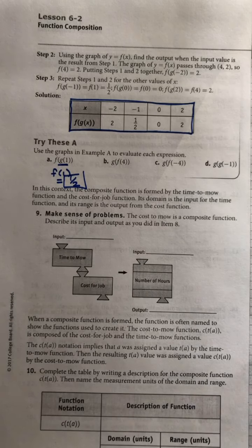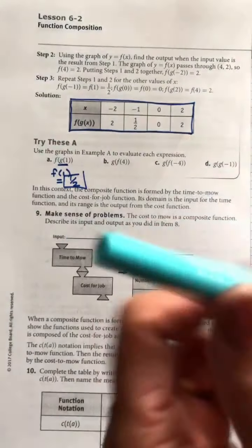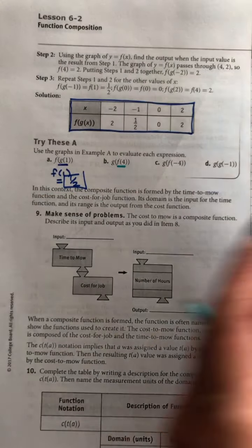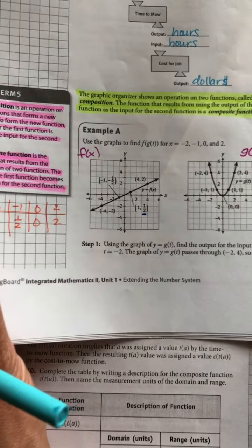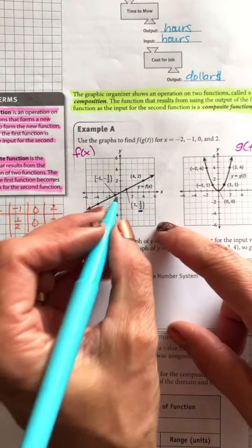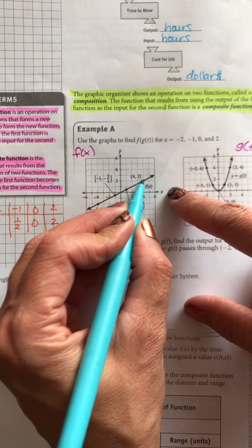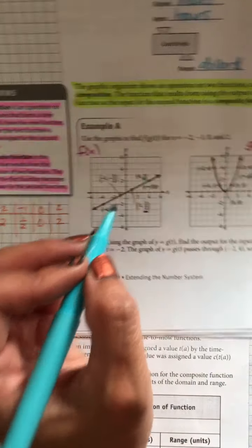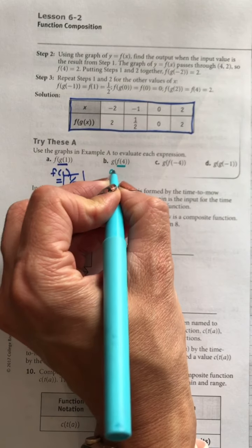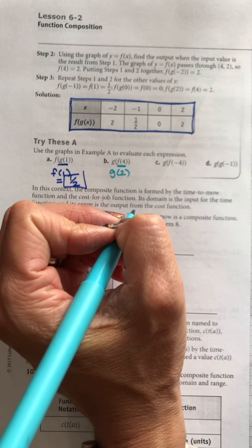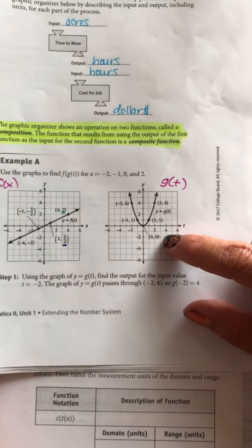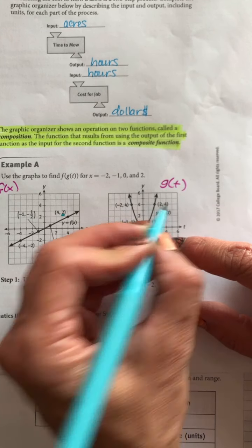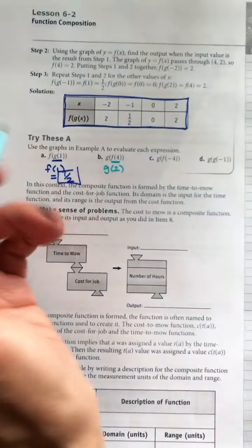Next: g of f of four. This time start with the f function — f of four. At x equals four on the f function, the y value is two. So now this is g of two. Go to the g function and find x equals two — when x is two, y is four. So the output is four.